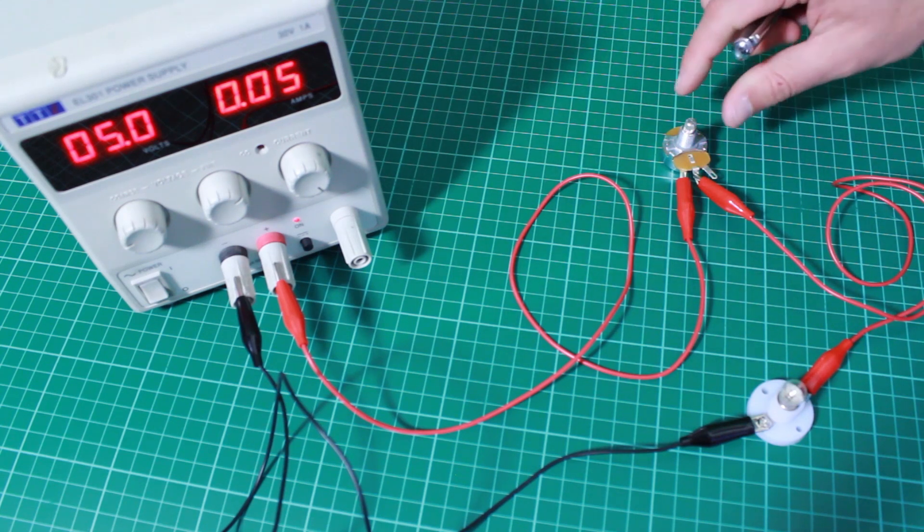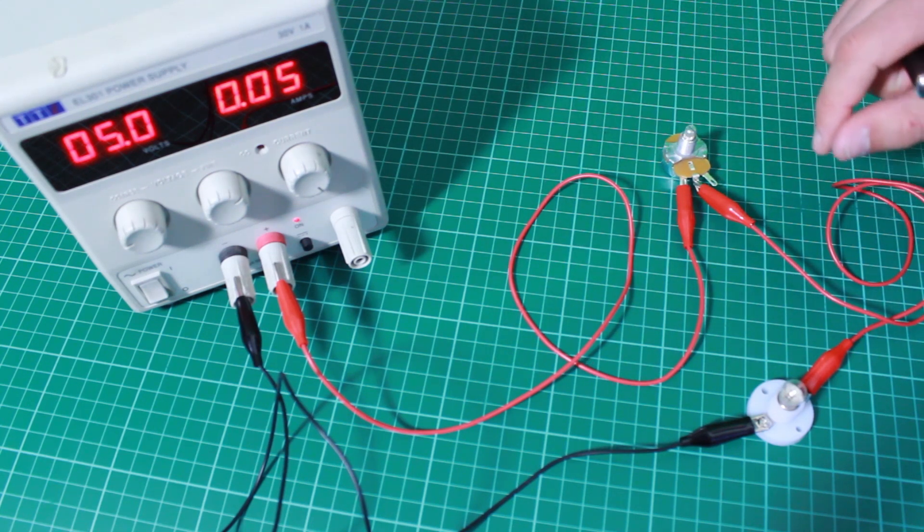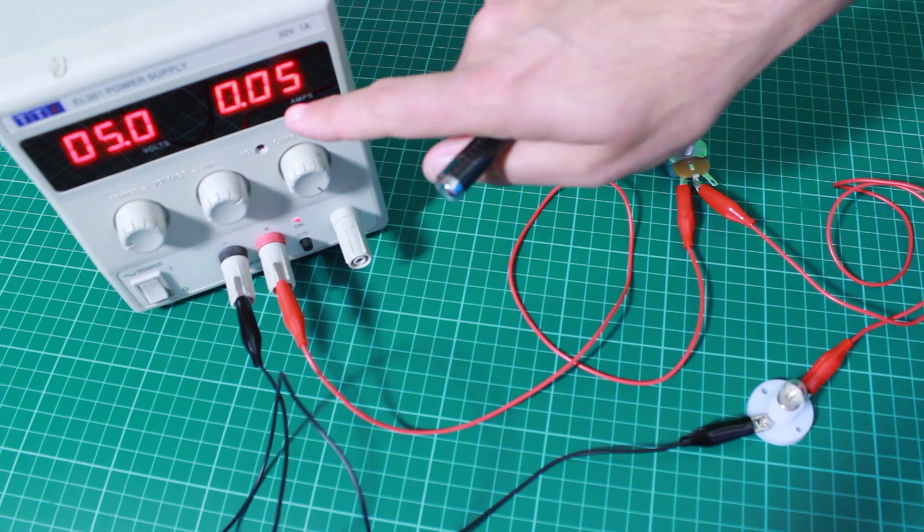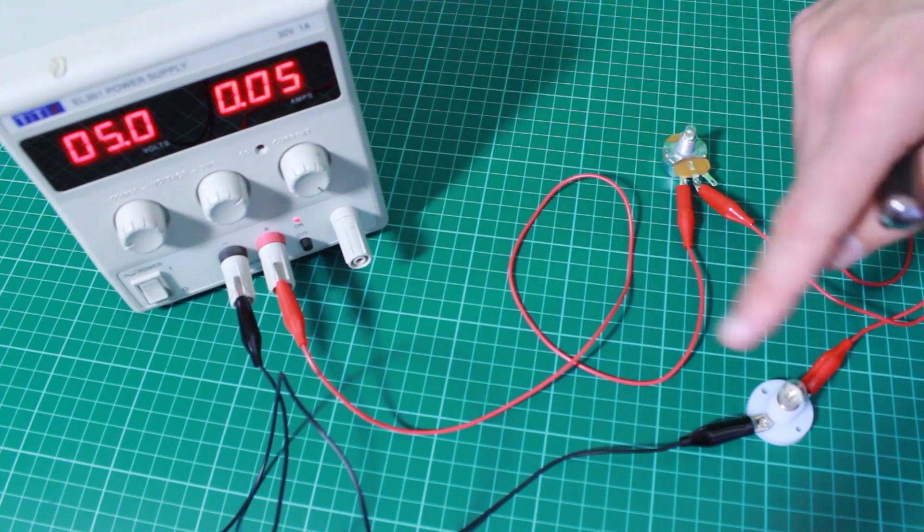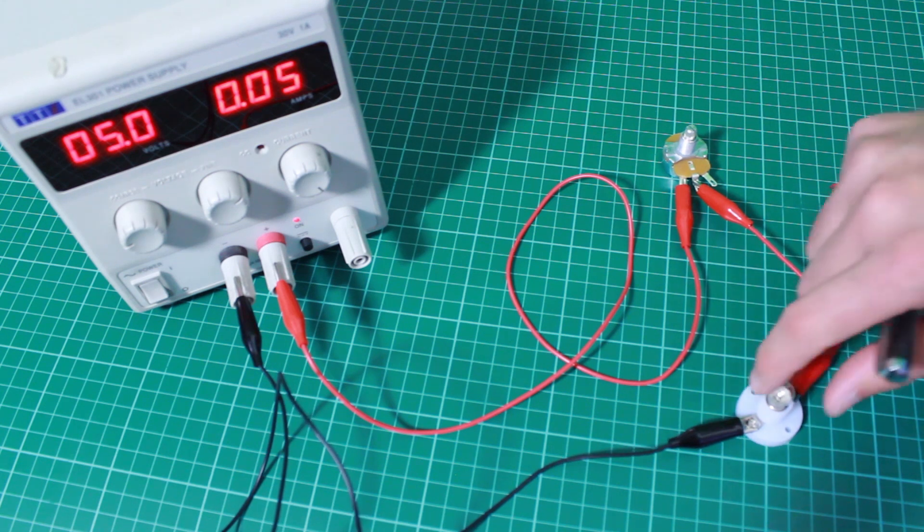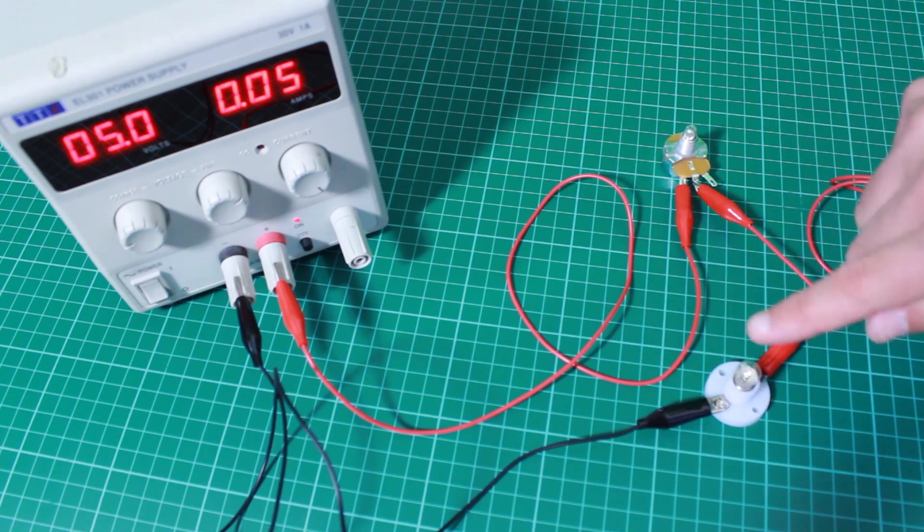At the moment the variable resistor is set to quite a high resistance and this means that only 0.05 amps are flowing through this circuit and the bulb is dim or virtually off.